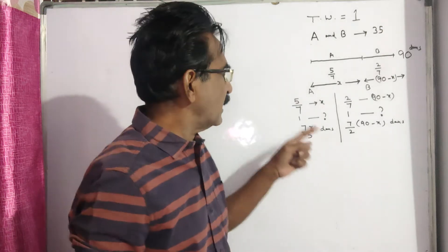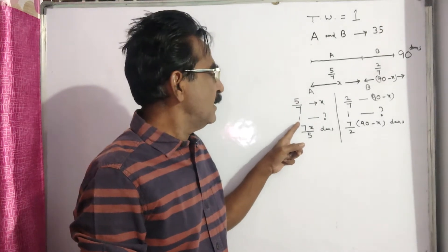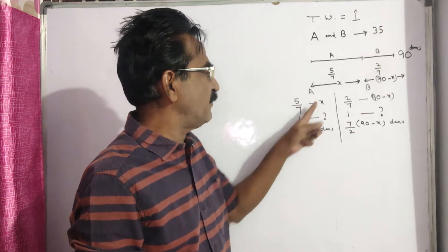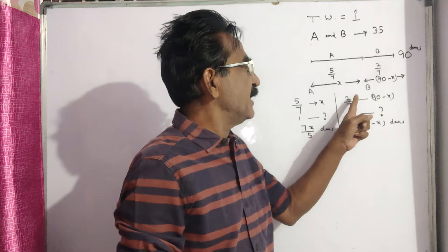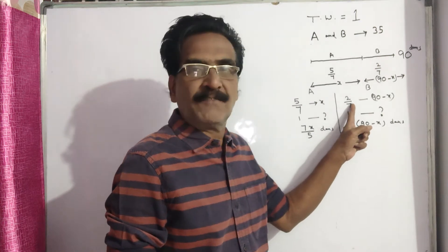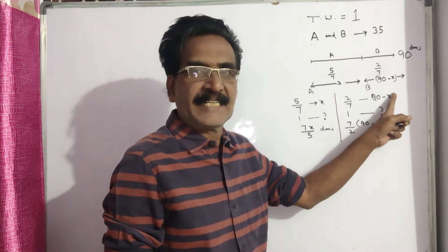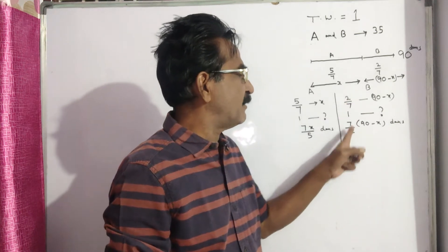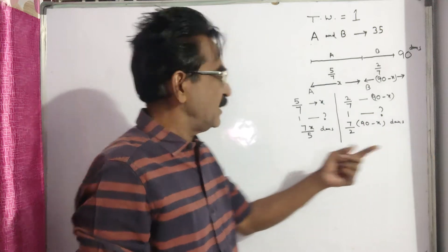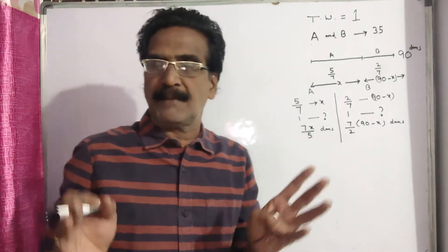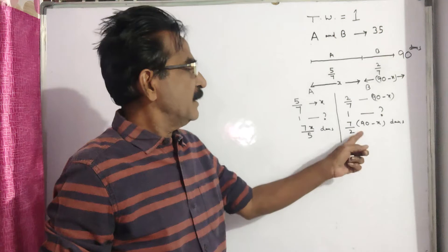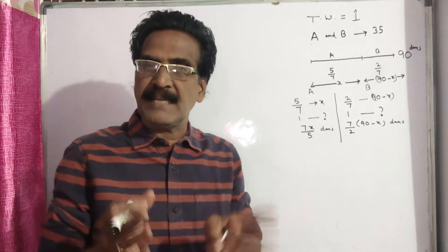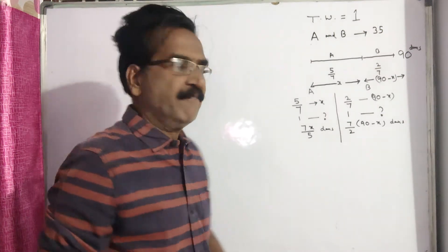So the total work can be completed by A in 7X/5 days — since 1 divided by 5/7 means 7/5 into X, giving 7X/5 days. In the same way, B completes 2/7 of the work in (90 minus X) days, so B completes the full work in 7/2 into (90 minus X) days.